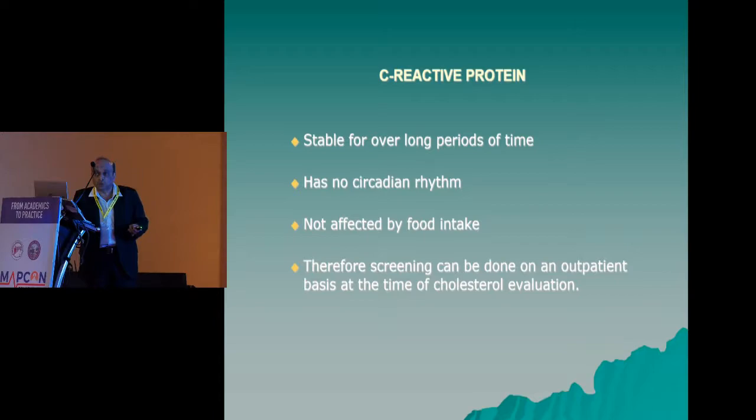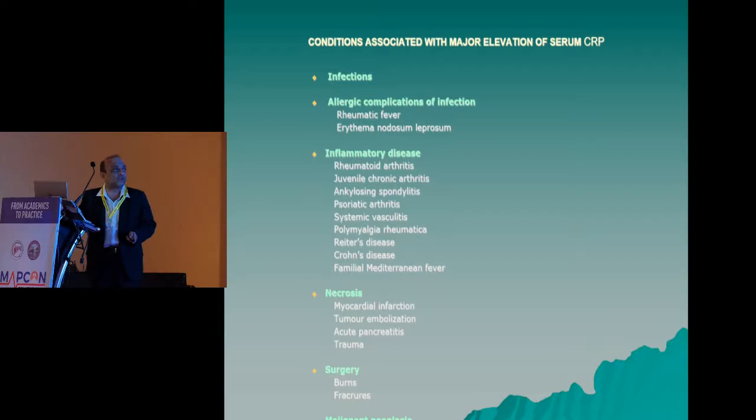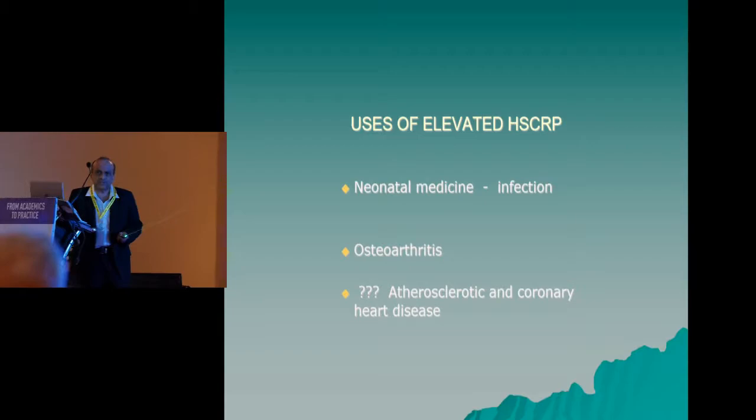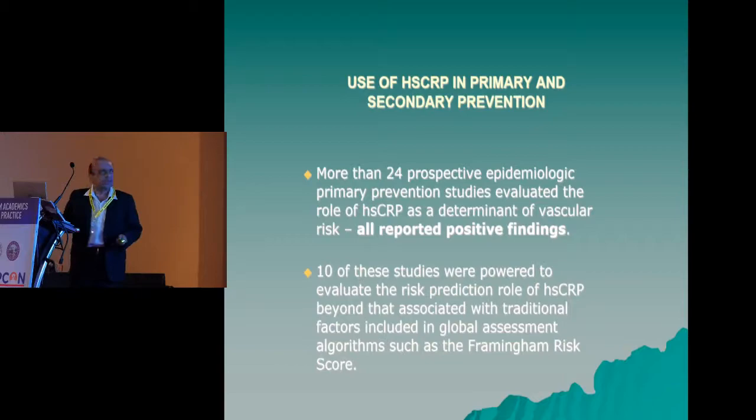HSCRP is stable for a long period provided there is no inflammation, acute injury, or infection. It does not have a circadian rhythm and is not affected by food intake, so it can be measured at any time of day in fasting or non-fasting conditions. Conventional CRP can measure only above 5 mg per liter, while HSCRP measures below 5 mg per liter. HSCRP has a proven role in neonatal sepsis, osteoarthritis, and now in atherosclerotic coronary artery disease.